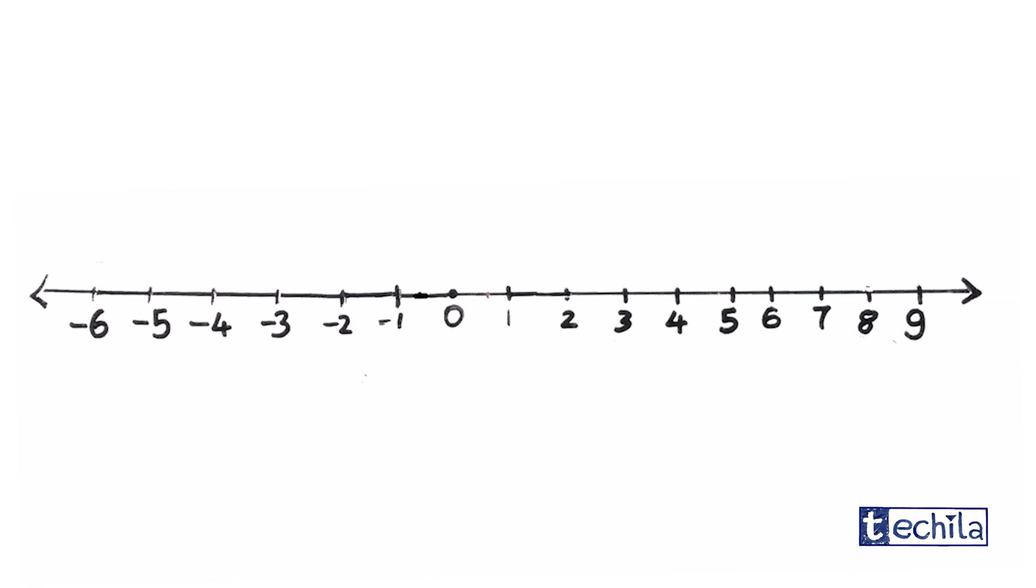That means, each of the numbers to the right of 0 is multiplied by factor 1 and the numbers to the left are multiplied by the factor minus 1.